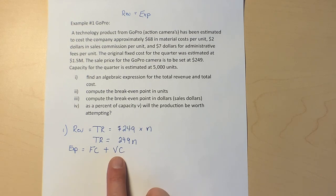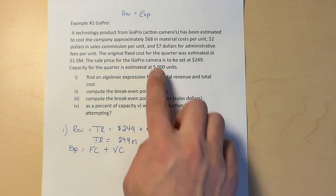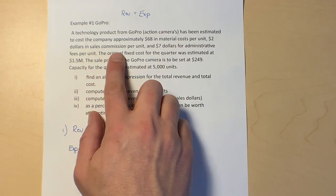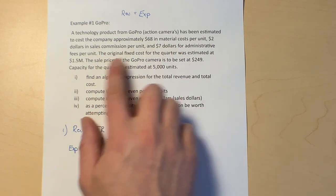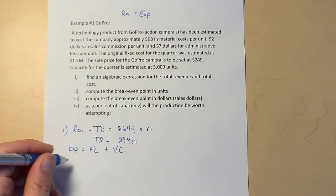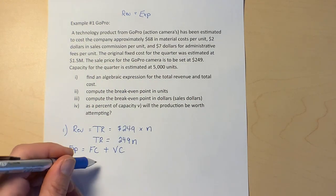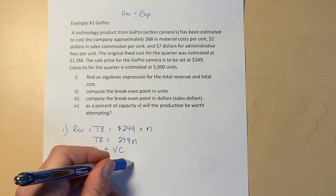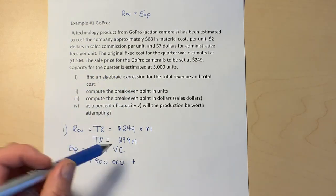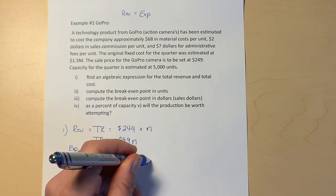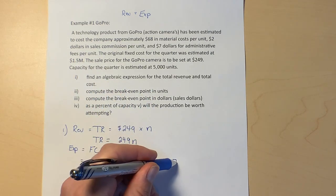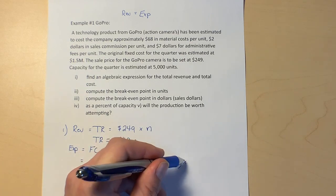VC is like materials costs per unit. In this question we had a few variable costs: $68 in material costs per unit, $2 in sales commission per unit, $7 in administrative fees per unit. If we think about our fixed costs, we have $1.5 million, and our variable costs are 68 plus 2 plus 7.